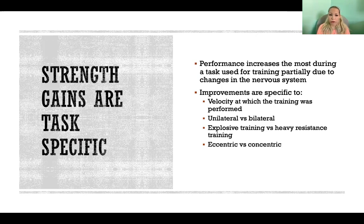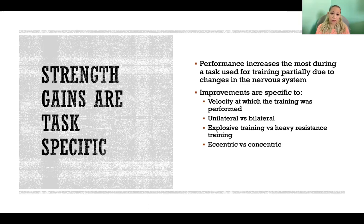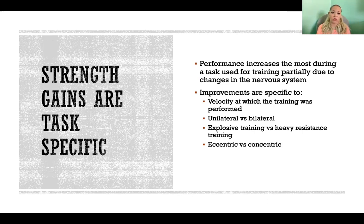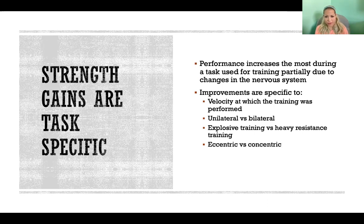Strength gains are also specific to whether the activity was done unilaterally or bilaterally. If you're doing a bilateral bicep curl, your strength gains are going to be primarily when you do a bilateral bicep curl. If you stop and do a unilateral curl, you might not see as much improvement in that unilateral bicep curl as you do when you do it bilaterally, and vice versa — if you're always doing it unilaterally, you won't see as much improvement in the bilateral curl. That's because the way the nervous system adapts to that exercise is specific to the way that the exercise was done.